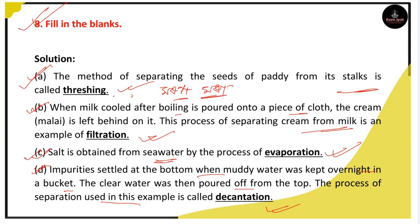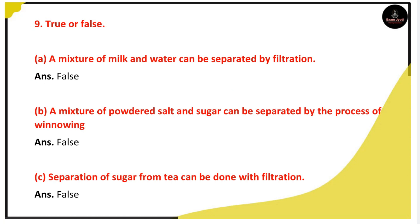Polish shraban means filtration and Ashraban means decantation. Next, number 3 is true or false. Statement A: A mixture of milk and water can be separated by filtration.